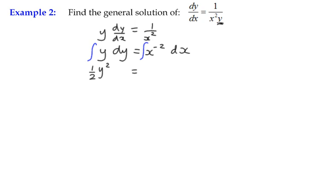And the integral with respect to x on the right hand side is x to the power negative 1 divided by the new power plus c. So we've got y squared equals two times negative 1 over x plus c. Y squared equals negative 2 over x plus c.